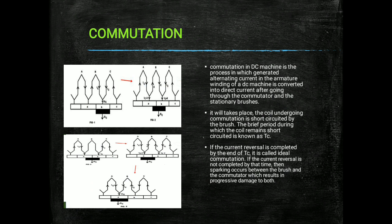If the current reversal is completed by the end of tc, it is called ideal commutation. If the current reversal is not completed by that time, arcing or sparking occurs between the brushes and the commutator, resulting in damage to the commutator and the brushes. Here we can see five images of the commutation process.